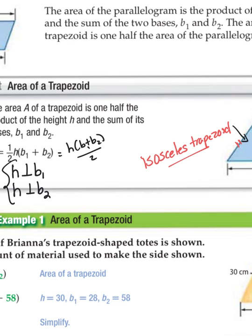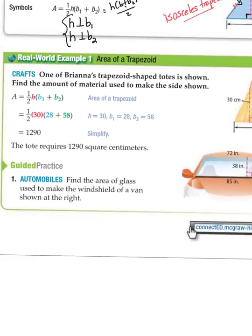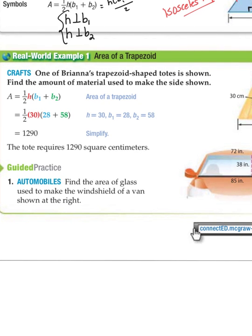Let's look at a couple of examples. One of Brianna's trapezoid-shaped totes is shown. Find the amount of material used to make the side shown. So, in other words, we need to know the region that's covered, so we're looking for the area. Just very simply, as I've told you before, I want you to write that formula down so that it gives you a focus of what you know and what you need to find. So, I'm going to plug in everything I know. The height is the perpendicular distance, so that's the 30. The bases are 28 and 58. So, here you can see, again, you're going to find your surface area of your tote, as they're calling it here, and make sure since it's area, you answer in square meters.